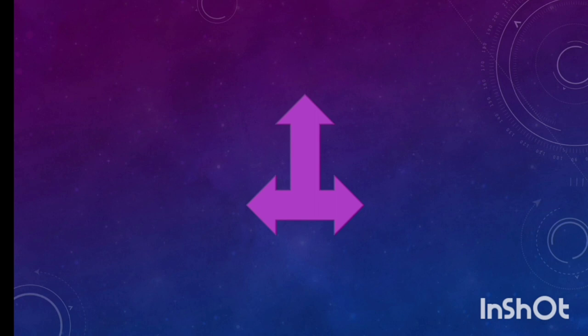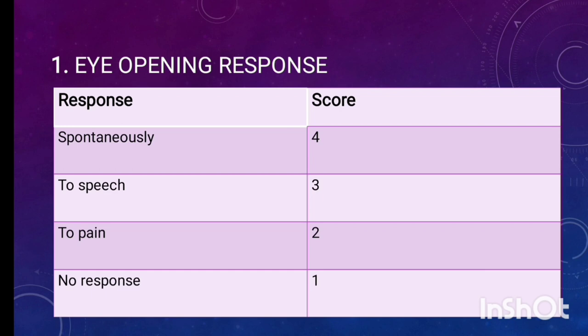Then we'll see eye opening response. First is spontaneously, that is spontaneous response and the score is 4. For example, when we are going to the patient side and if he is able to open his eyes voluntarily, we'll give the score 4. These kind of patients can be seen in the ward. Next one is eye opening response to speech and the score is 3.